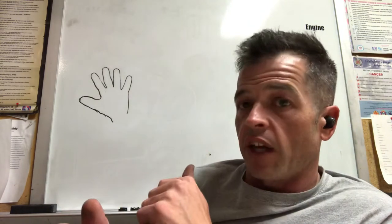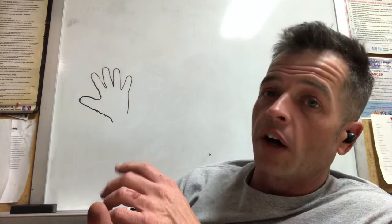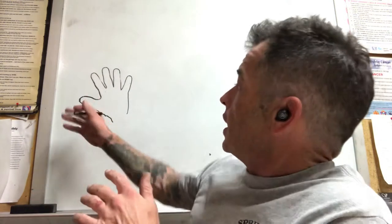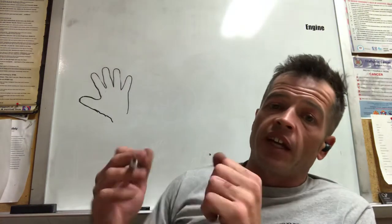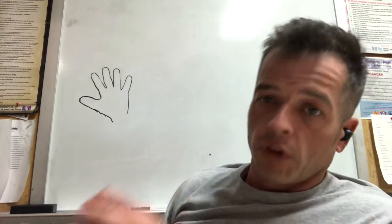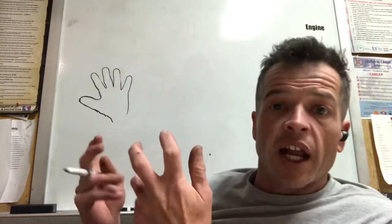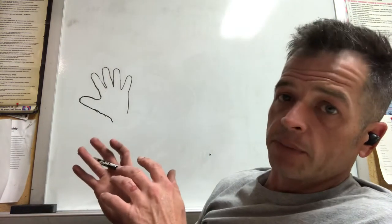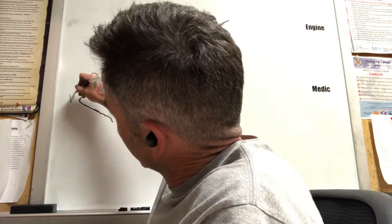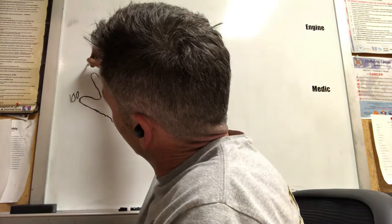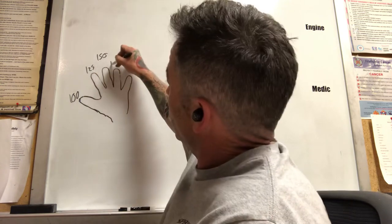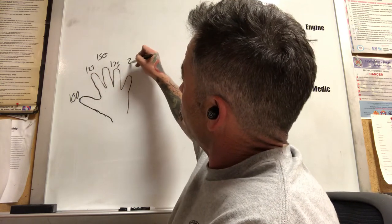If you have watched that or if you just want a refresher on the hand method, let's get down to it. Each finger on your hand is going to be assigned a value for a flow, starting at 100 or 95 and working its way up in increments of 25 gallons per minute. So 100 at the base, 125, 150, 175, and then 200 at the end.